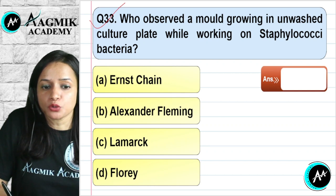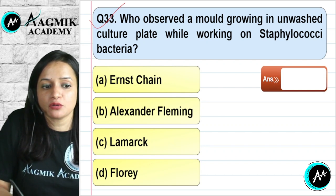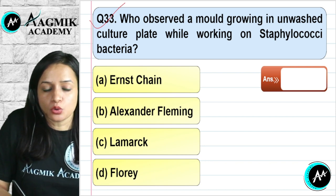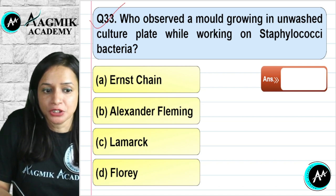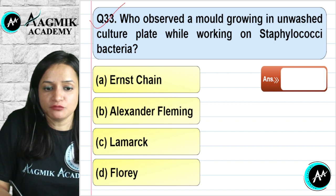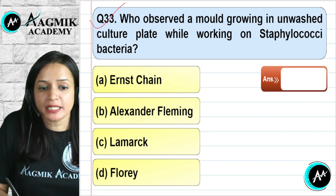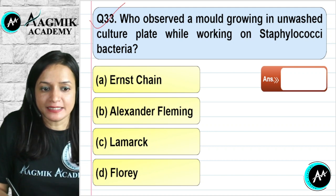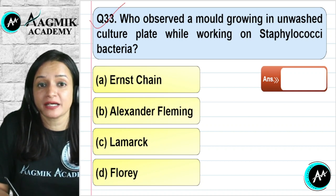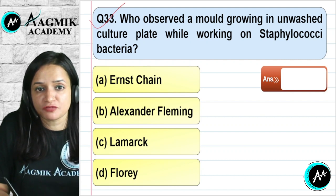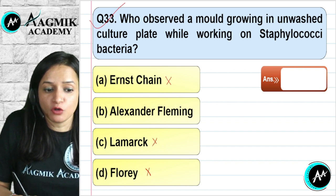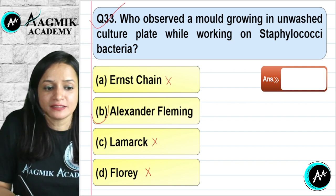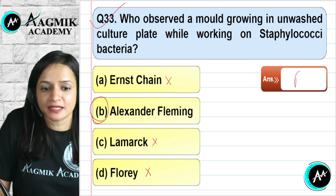Question number 33: Who observed a mold growing in an unwashed culture plate while working on Staphylococcus bacteria? It was Alexander Fleming, who observed that bacteria could not grow where a mold had grown. This is a famous experiment discussed in the NCERT. Chain, Lamarck, and Florey are not the discoverers. The correct option is B — Alexander Fleming.